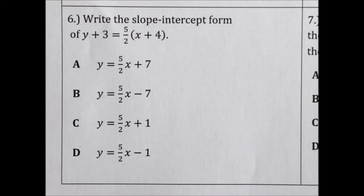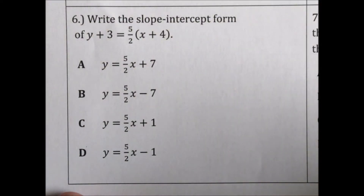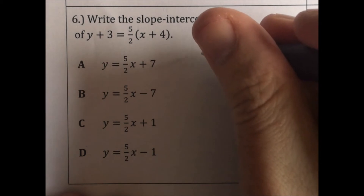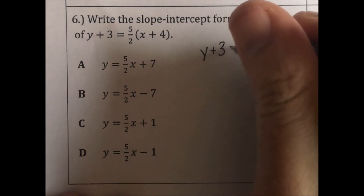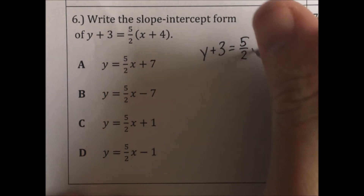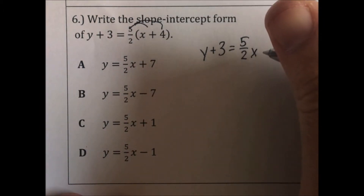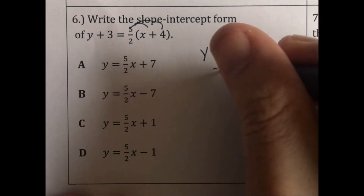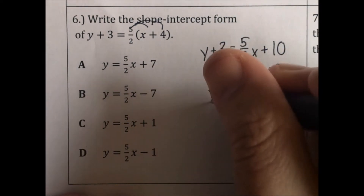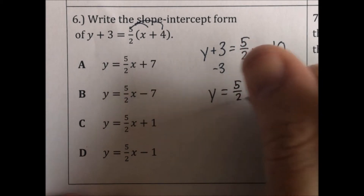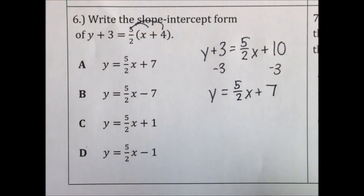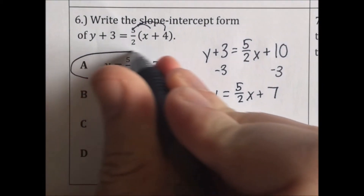Write the slope-intercept form of y plus 3 equals 5 halves parenthesis x plus 4. Same idea — we just have to get y alone. We distribute the 5 halves: 5 halves of 4 is 10. Then subtract 3 from both sides: y equals 5 halves x plus 7. That's choice A.